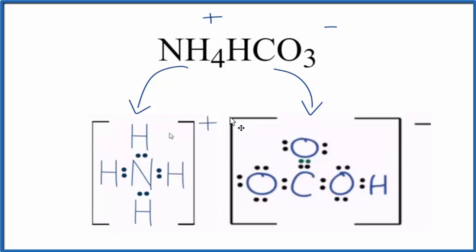Those are attracted. That forms the ionic compound. So this would be the Lewis structure for ammonium bicarbonate.